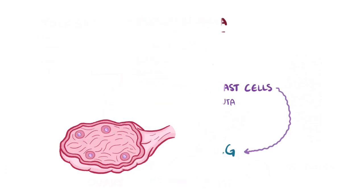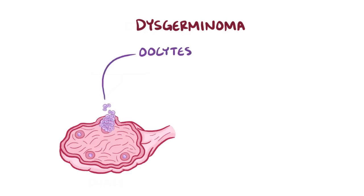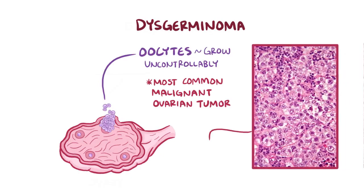The fourth subtype is a dysgerminoma, and it's made of germ cells that turn into oocytes, which is actually the normal pattern, but then they start to grow uncontrollably. It turns out that these are the most common malignant types of ovarian tumors. Under the microscope, the germ cells have a central nuclei surrounded by a clear cytoplasm.